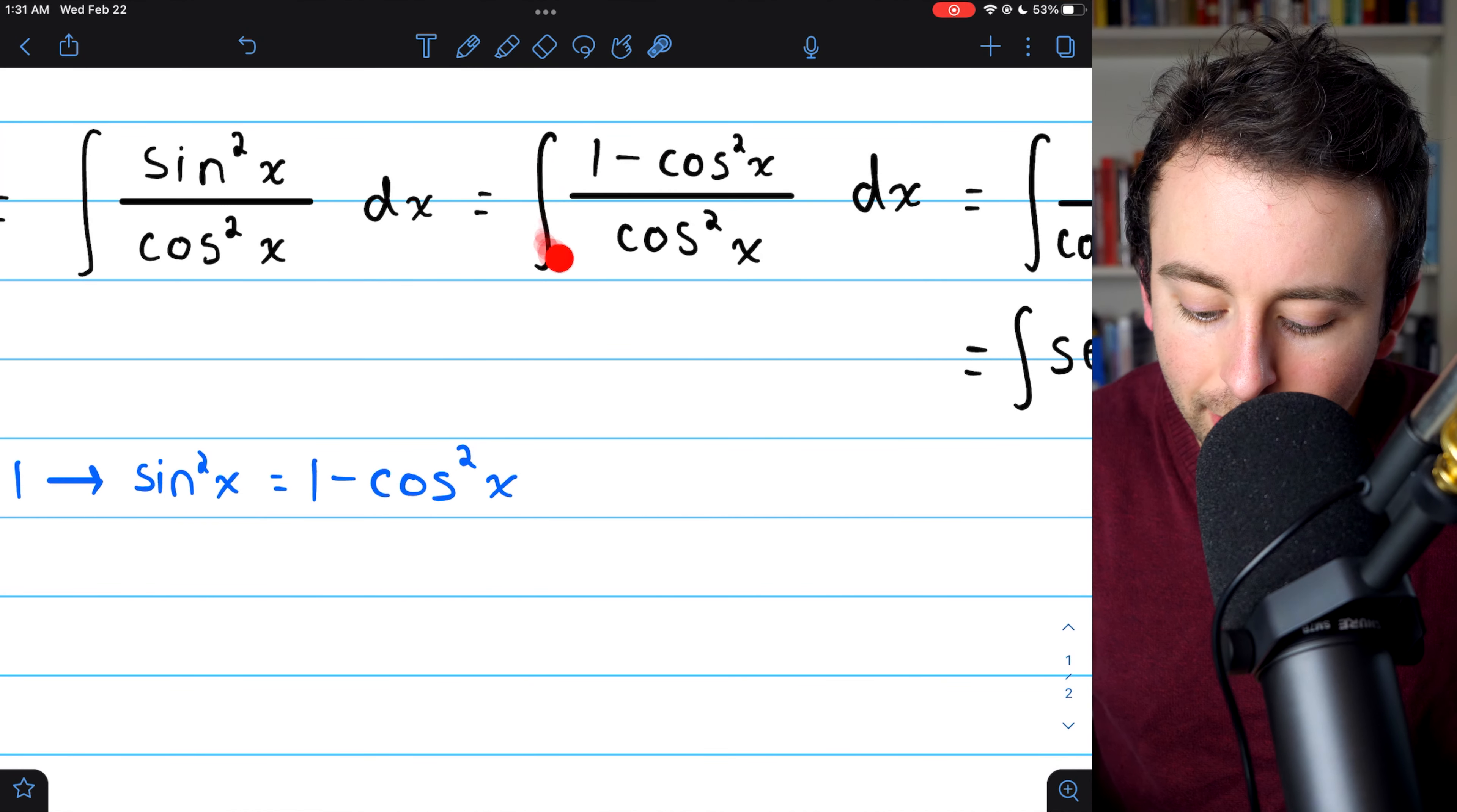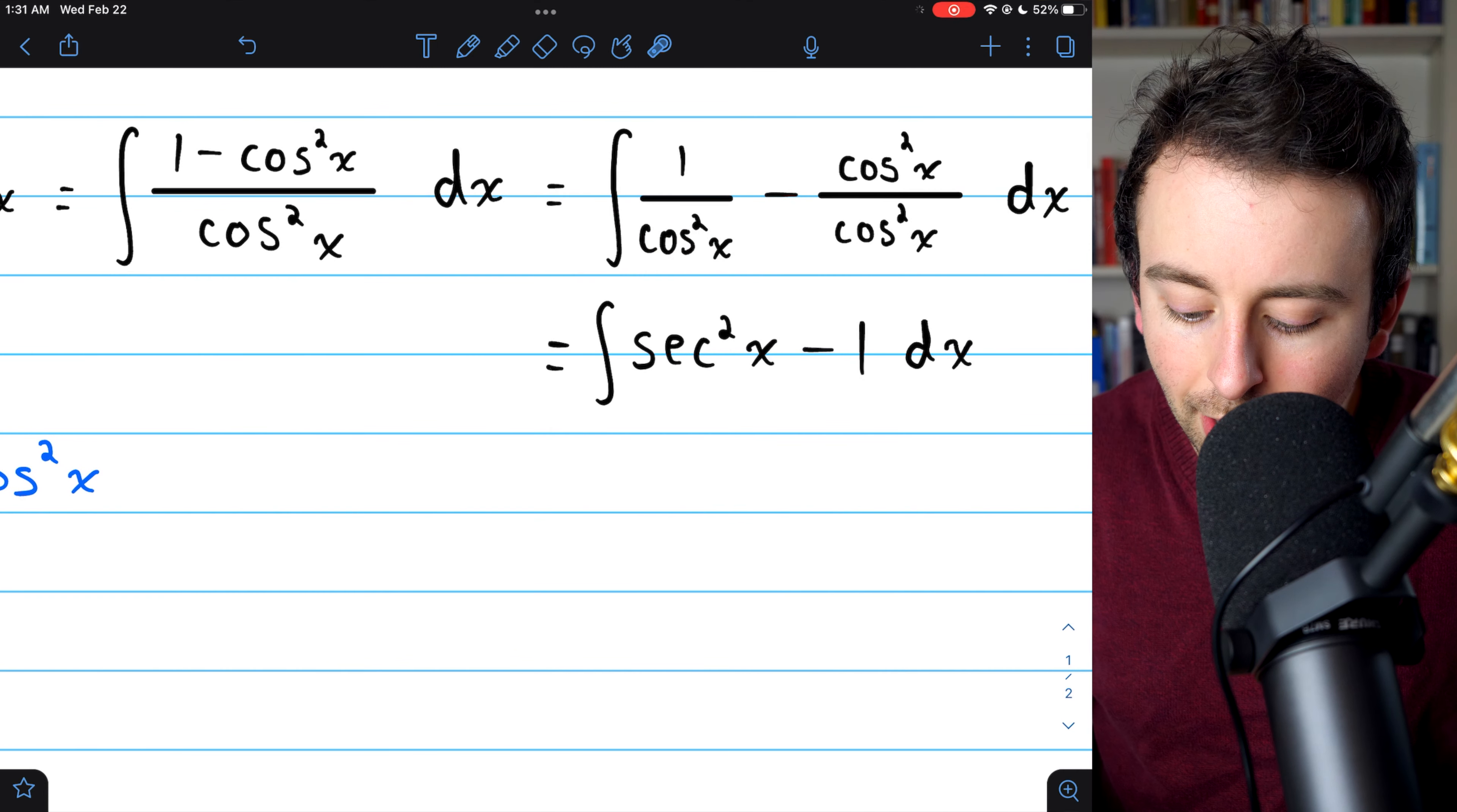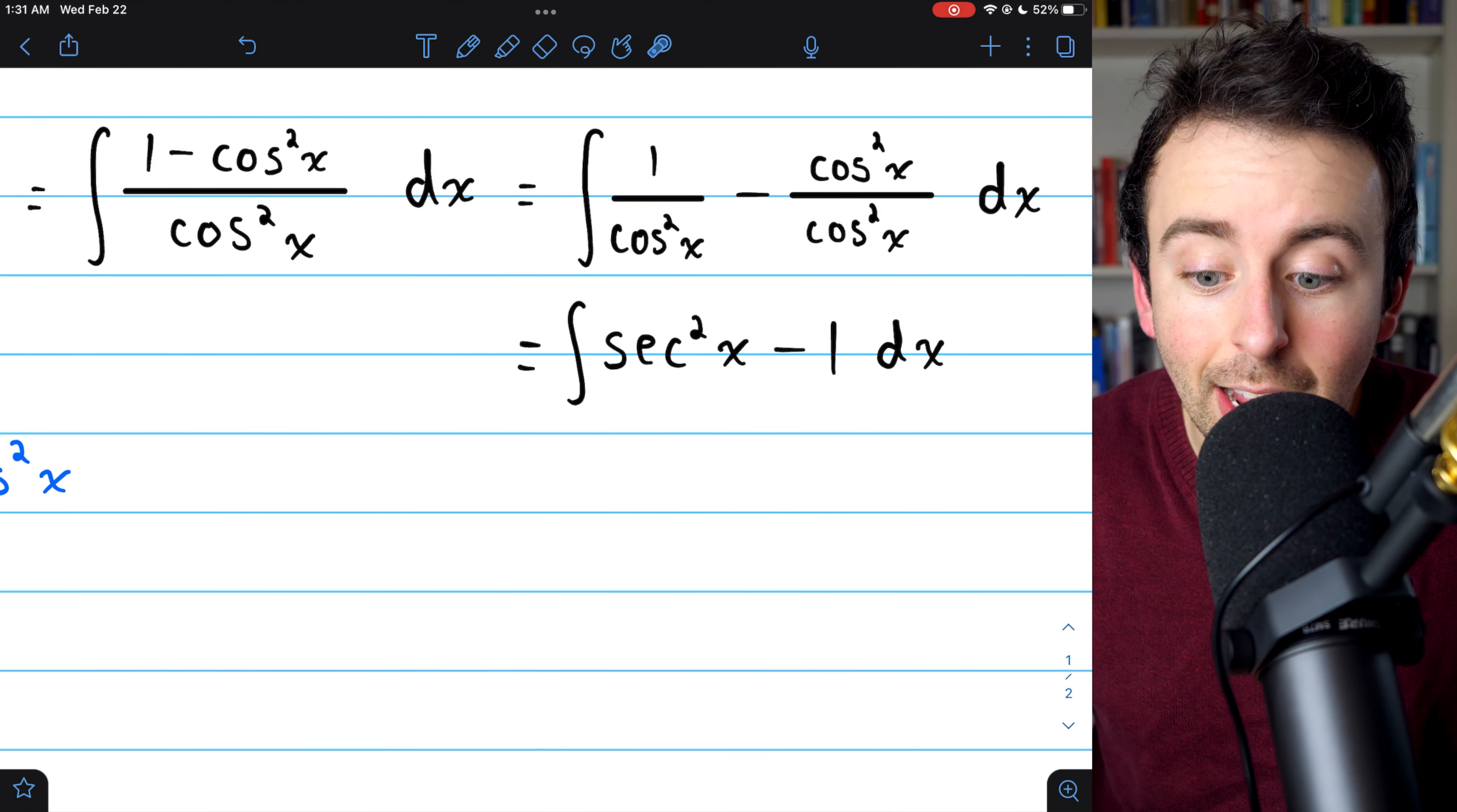Now we're integrating one minus cosine squared over cosine squared, and we can split this up into one over cosine squared minus cosine squared over cosine squared. We just split up the fraction, and then we can simplify.